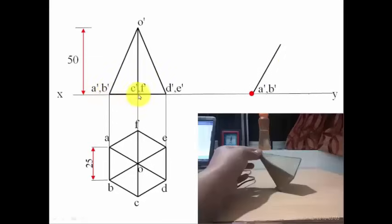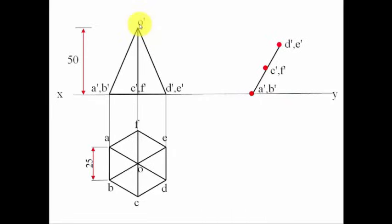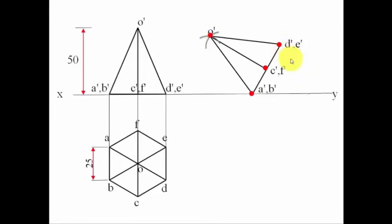Keep one leg of the compass at the grounded edge, other leg at the far end of that edge, and put an arc. Do the same for the D-dash E-dash edge. For point O-dash, keep one leg of the compass at the apex position, put an arc; repeat from another reference point and put a second arc. The intersection of these arcs gives you O-dash. Join O-dash with both end points of the inclined base to complete the front view. The axis now makes 30 degrees with the XY line because the base was kept at 60 degrees.